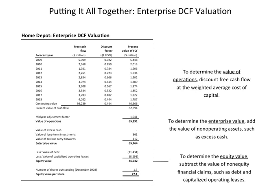We have to forecast out the cash flows for the company in the future, starting with the operating values. What McKinsey did for Home Depot — the book was written in 2008 — is they were forecasting Home Depot from 2009 forward. They created forecast years 2009 through 2018 and forecasted the free cash flow year by year for each of those years. They then estimated a cost of capital, a WACC of 8.5%, based on the weighted average cost of capital at the time, which created the discount factors.